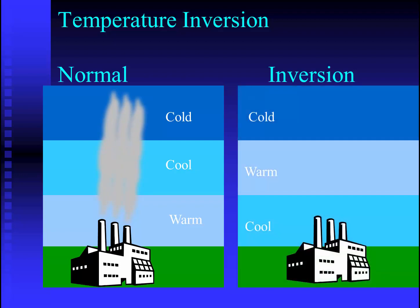On the other hand, if we have an inversion, what that means is there are cooler layers of air closer to the surface with warmer air aloft. If the same factory produces smoke, that smoke will cool in the cooler surface air and will not continue to rise through the warmer layer above. This traps that smoke closer to the surface of the Earth, and is, of course, one of the major factors for atmospheric pollution.